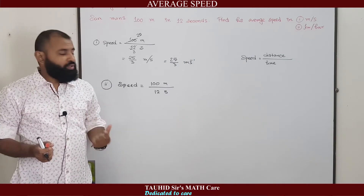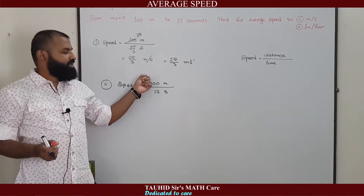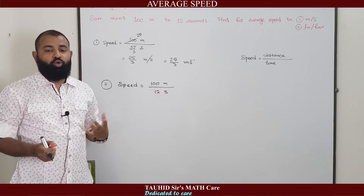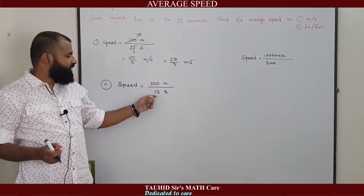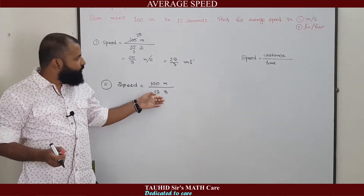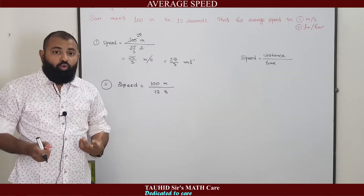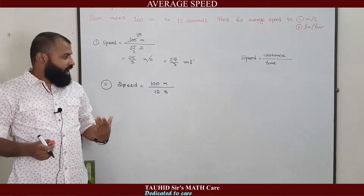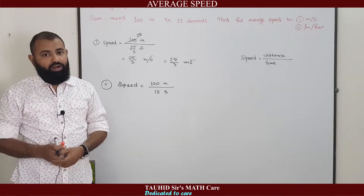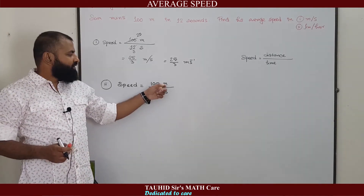Now what about the value in kilometer per hour? We already know that average speed equals total distance divided by total time. The total distance is 100 meters and the total time is 12 seconds — the same values used in part one. But now we are asked to find this value in kilometer per hour, so we must convert the units.